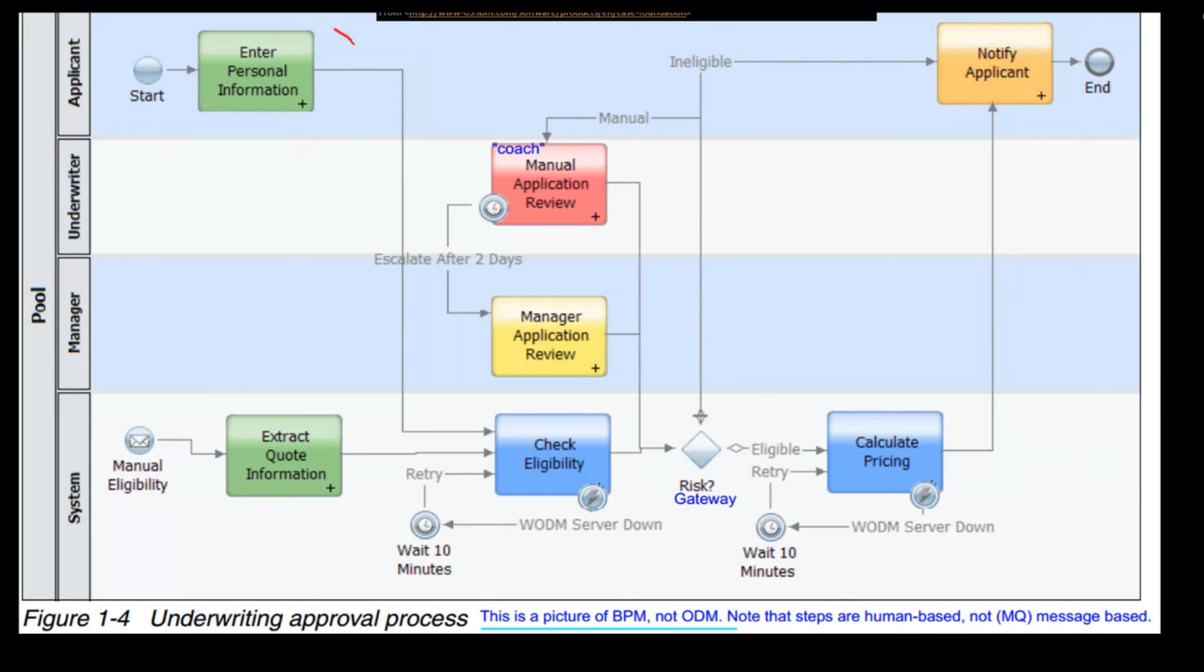Some of these things may be manual entry or semi-manual, so here someone is entering some information. There's a review process, this is called a coach in the language. Some of these pieces may also be automated. The check eligibility, that's probably something automated.